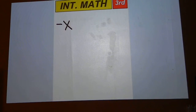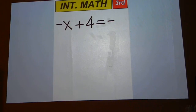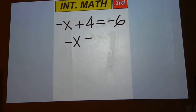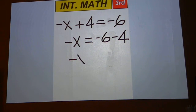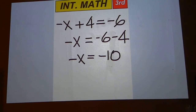Negative x plus 4 equals negative 6. Move the positive 4 — the plus 4 — over to the right. Make it minus 4. Negative 6 minus 4 is negative 10.